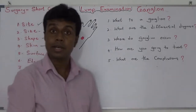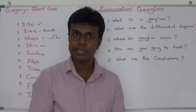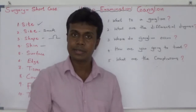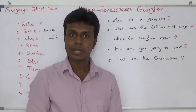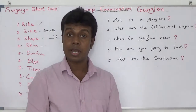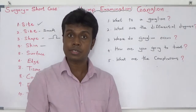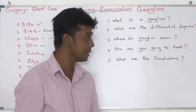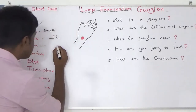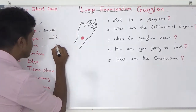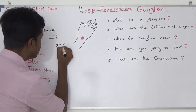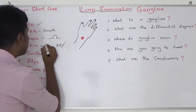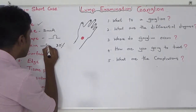Regarding the skin, there may be a scar from previous surgery. Ganglion carries a very high incidence of recurrence — the recurrence rate can go up to 20% — therefore there may be a scar present.